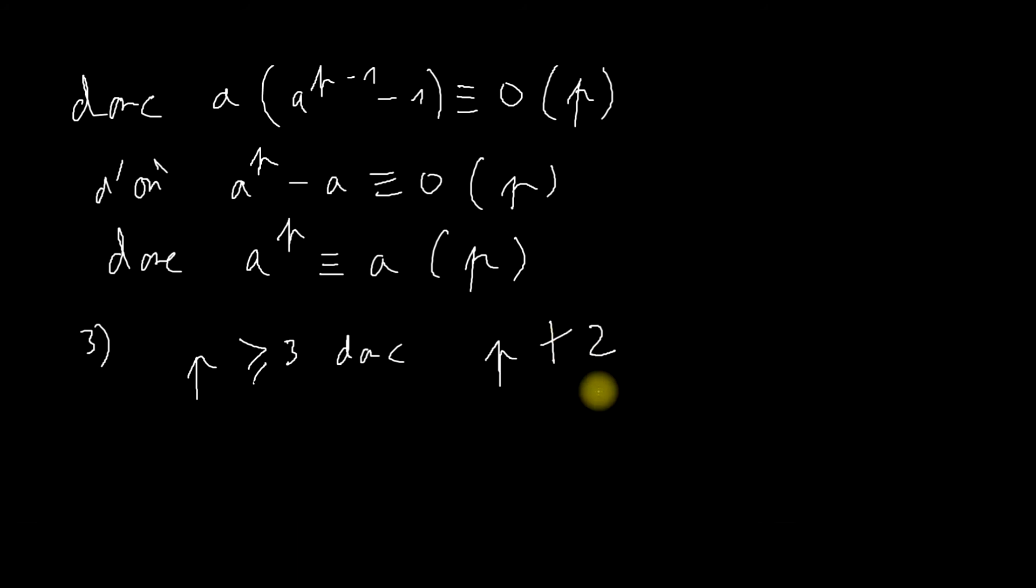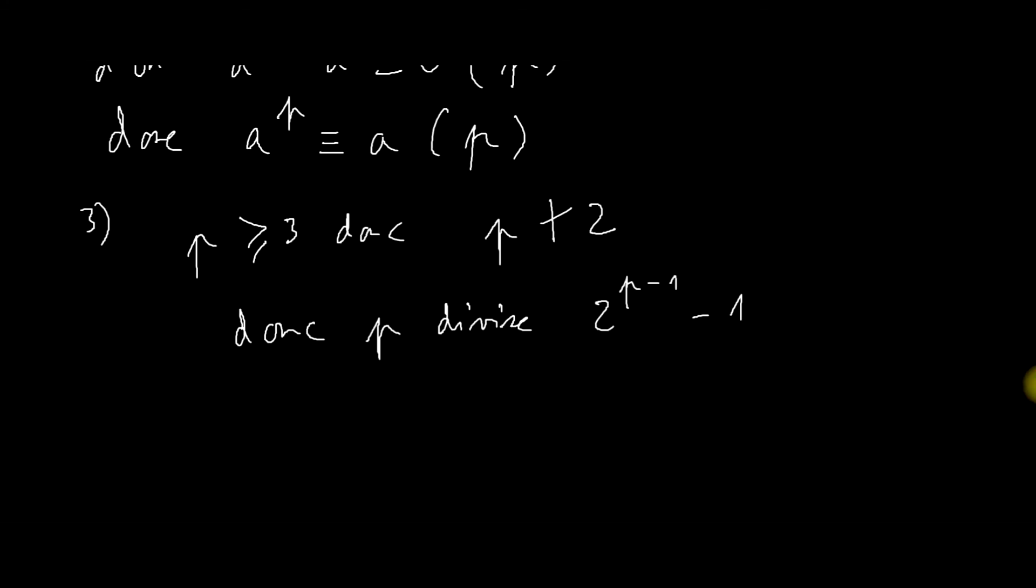P est supérieur ou égal à 3, donc P ne divise pas 2. Donc on peut appliquer le petit théorème de Fermat. P divise 2 puissance P moins 1 moins 1. Mais, ça en réalité, ça correspond à 1 plus 2, plus 2 puissance 2, etc., plus 2 puissance P moins 2. Pourquoi? Si j'utilise la somme des termes d'une suite géométrique, je sais que c'est égal à 1 moins 2 puissance P moins 1 sur 1 moins 2. Ce qui fait 2 puissance P moins 1 moins 1.